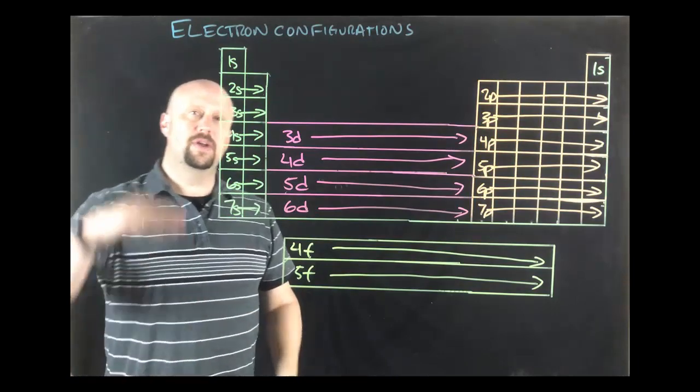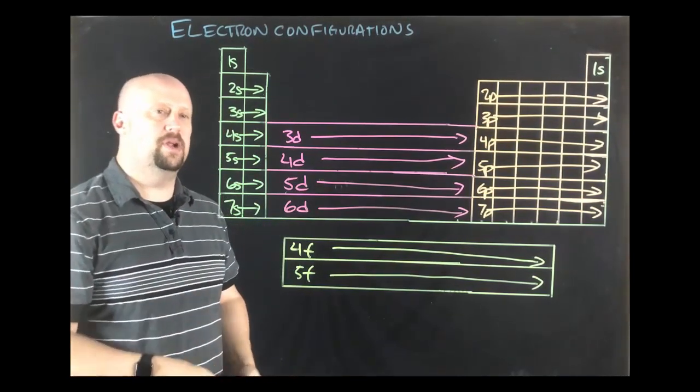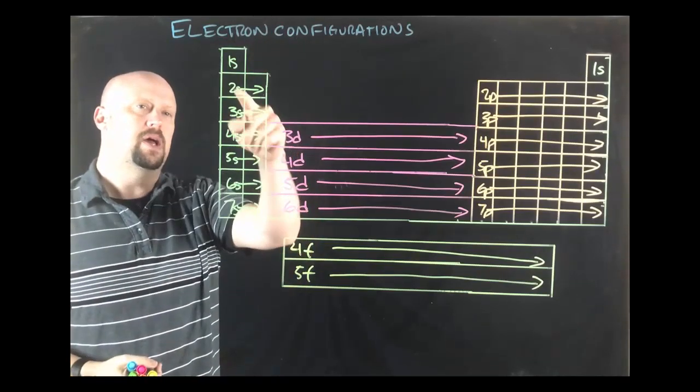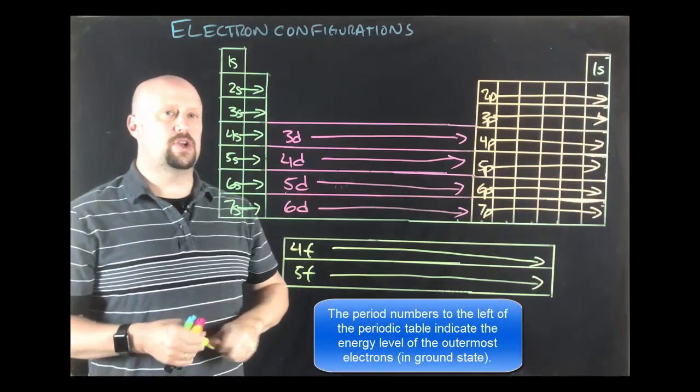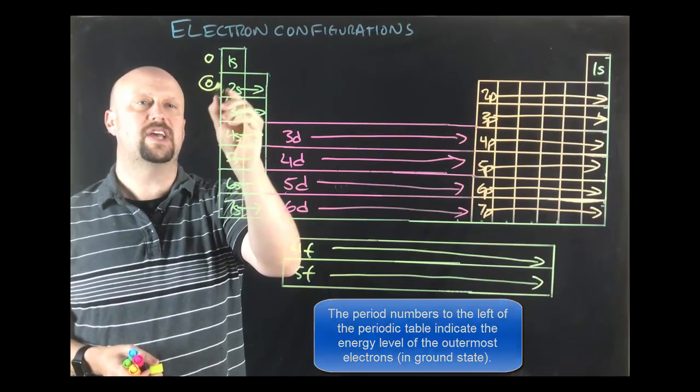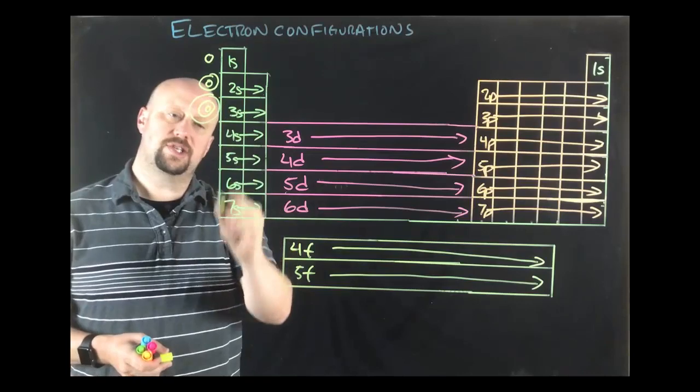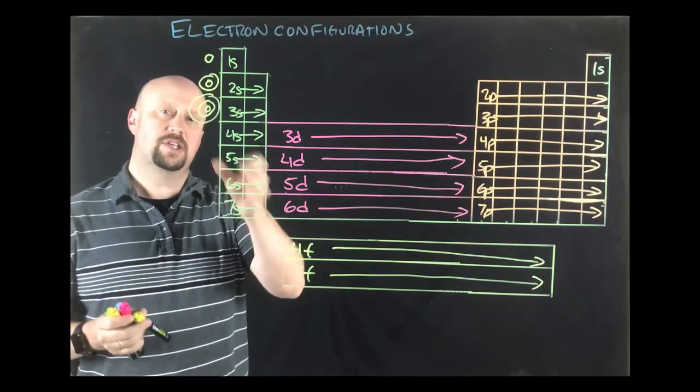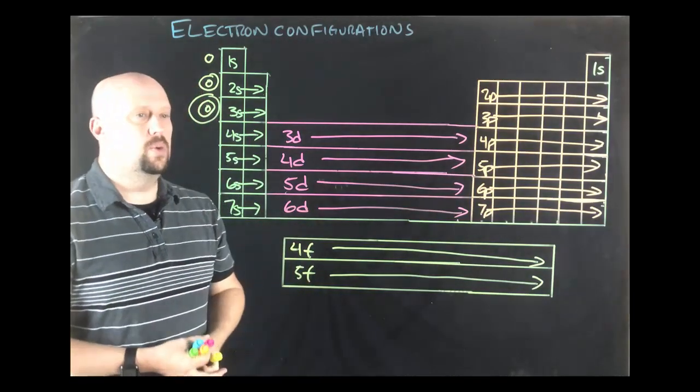Now, what you will also notice is that as you go down each period, remember that rows are periods in the periodic table. And so as you go down each one of them, you are adding another energy level. If we were to draw that in terms of the Bohr model, we would have one little circle and then we would have a second one and then a third one and so on and so forth until we had seven energy levels there associated with that.